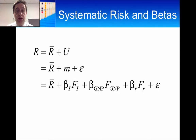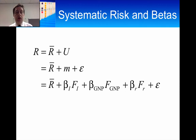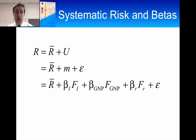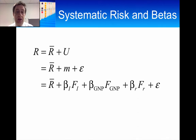As a review of what we've covered already, we can see that the returns on a security consist of two components. One is what you expect is going to happen, and the other is what you don't expect to happen. We can dichotomize that into the expected return component and the unexpected return component. The expected return component has no real uncertainty.